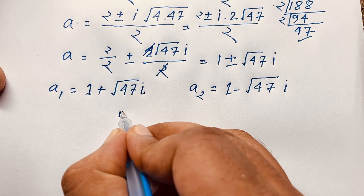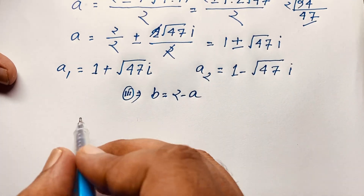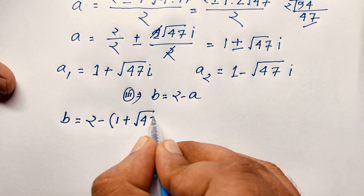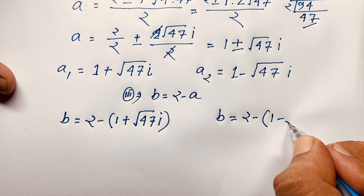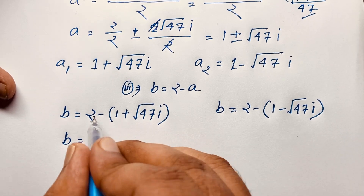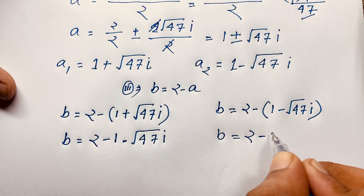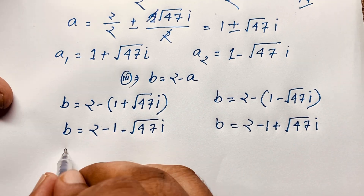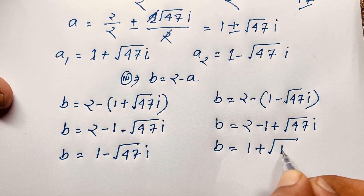Using v equals 2 minus a: when a equals 1 plus square root of 47 times i, then v equals 2 minus (1 plus square root 47 i), giving v equals 1 minus square root 47 i. For the second case, when a equals 1 minus square root 47 i, then v equals 2 minus (1 minus square root 47 i), giving v equals 1 plus square root 47 i.